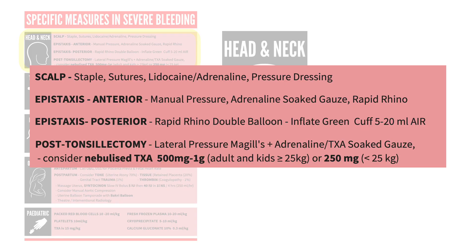For scalp wounds, we think about controlling bleeding with staples or sutures, local anesthesia with adrenaline, and applying pressure. Managing anterior epistaxis involves pressure, adrenaline, and a specific device for nasal packing. In posterior epistaxis, we may need to put in a balloon catheter and inflate the posterior balloon with air. If a patient comes in with a post-tonsillectomy bleed, we apply pressure using McGill's forceps and adrenaline or TXA-soaked gauze, and consider nebulized TXA.